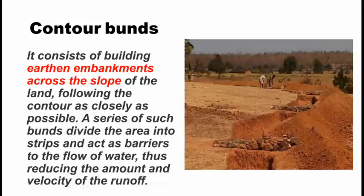The next measure is a contour bund. It is mainly an earthen embankment constructed along the contour and across the slope. It acts as a barrier for the runoff flow, reduces the amount and velocity of the runoff, and increases the maximum water infiltration.